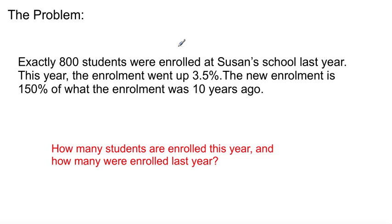Here's the problem. Exactly 800 students were enrolled at Susan's school last year. This year, the enrollment went up by 3.5%. The new enrollment is 100% of what the enrollment was 10 years ago. It's a lot here.